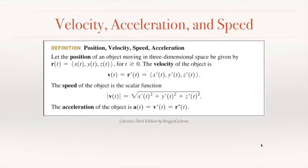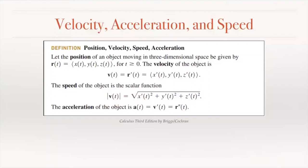So: position, velocity, speed, and acceleration — and a new concept here is speed. Let the position of an object moving in 3D space be given by r(t) with its x, y, and z components for t positive. The velocity is the derivative of position — the derivative of the respective components. Speed is a scalar; it does not care about direction. Speed is the magnitude of velocity: the square root of the sum of the squares of the components. Acceleration is the derivative of velocity, but since velocity is already the derivative of position, acceleration is the second derivative of position.